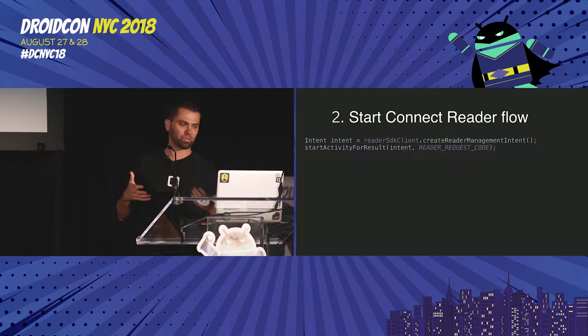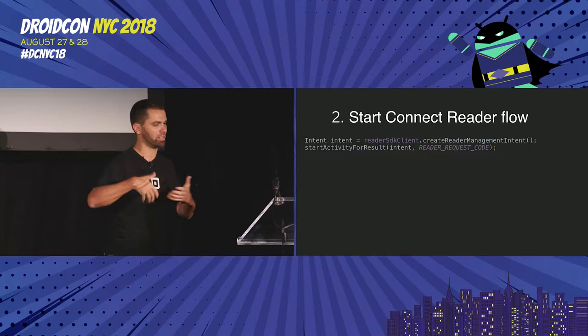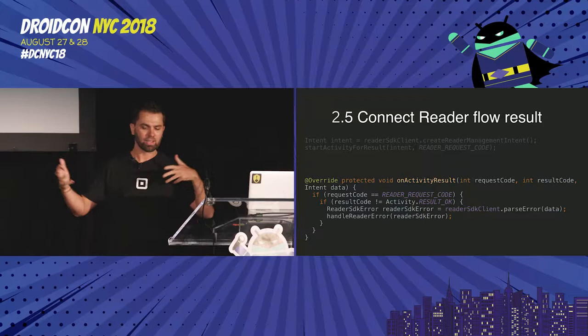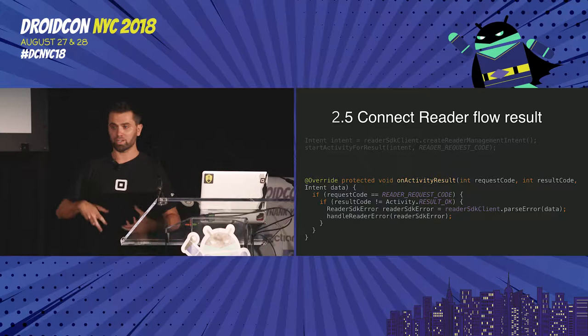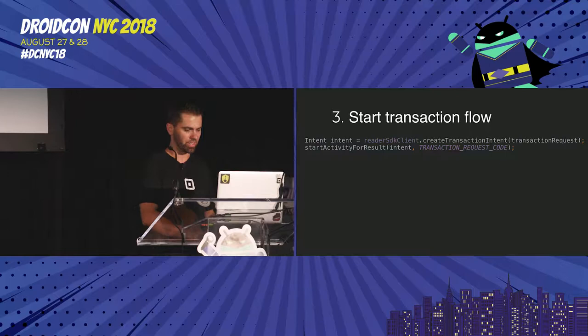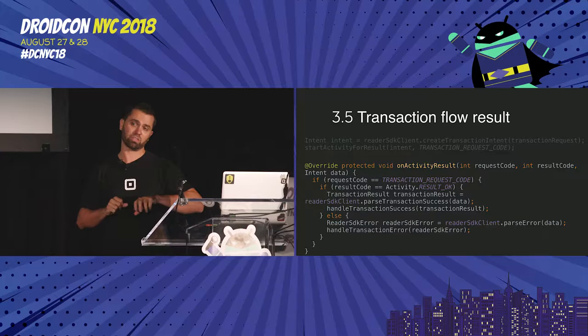To start the reader flow, you create an intent for that activity and call startActivityForResult. When you get a result, you override onActivityResult and deal with the request code, check whether the result code was good, parse the intent, and convert it into an object. Then you start the transaction flow the same way — starting, ending, managing, and converting the intent to an object based on whether it's a success or error.